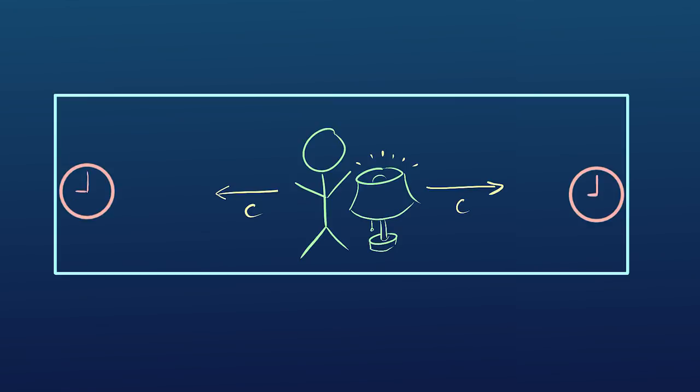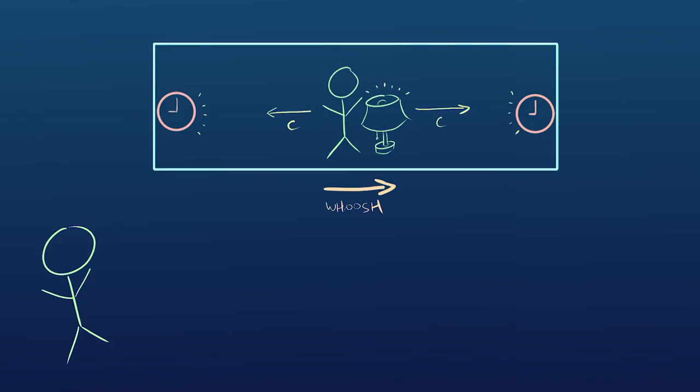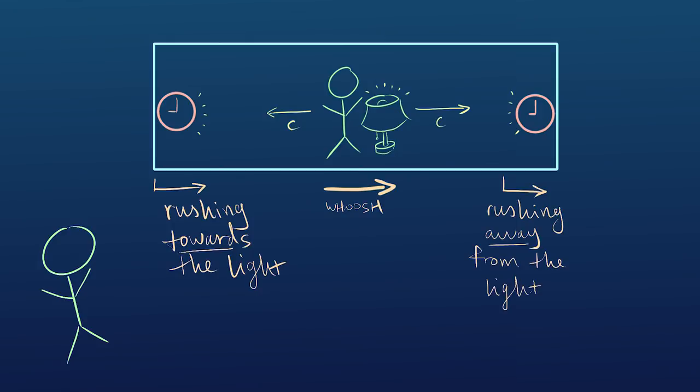So you're at the dead center of a train car and you turn on a light, which is the same thing as throwing a photon moving at c towards either end of the train and both sides of the train get hit at the same time. So let's put a clock at both ends of the train. So both clocks get hit at nine o'clock in your frame.